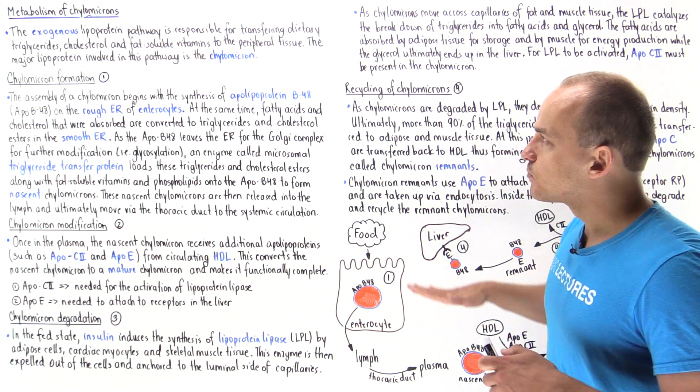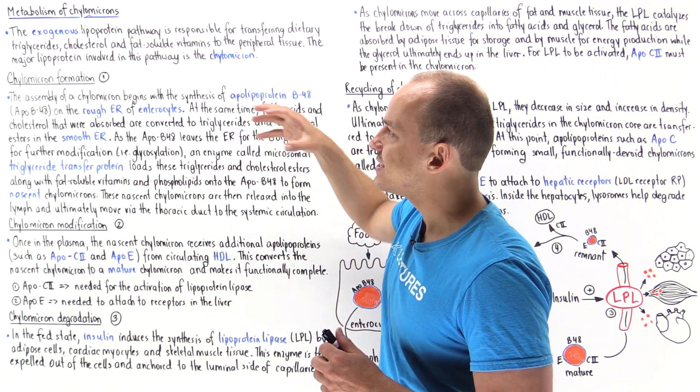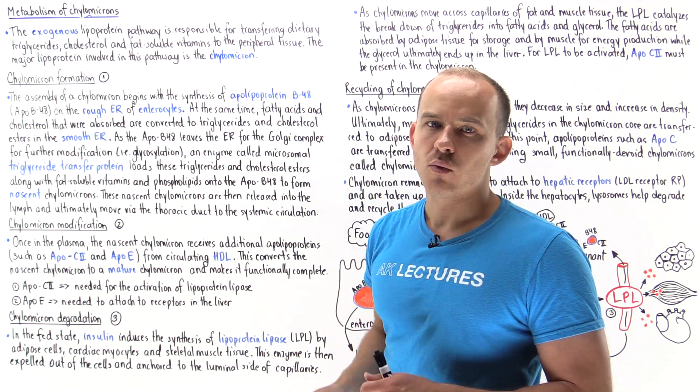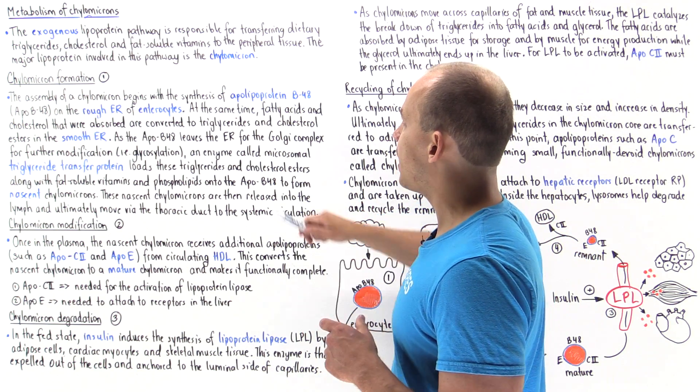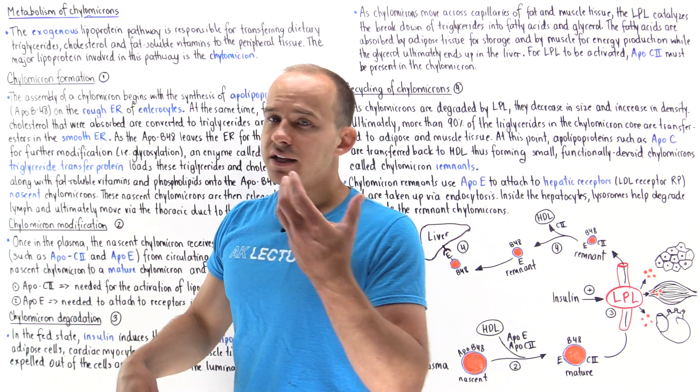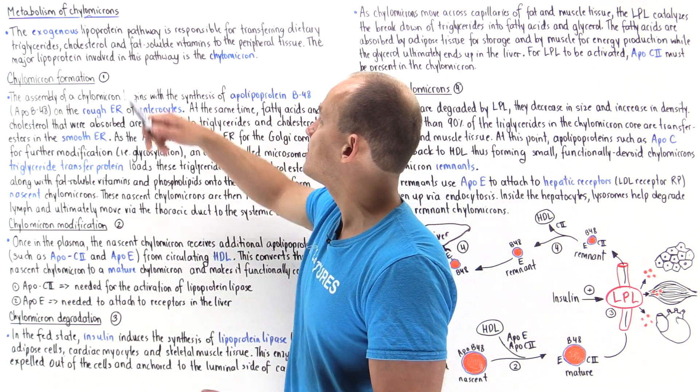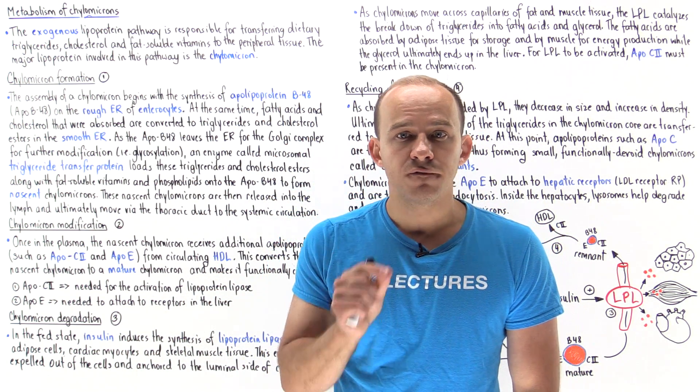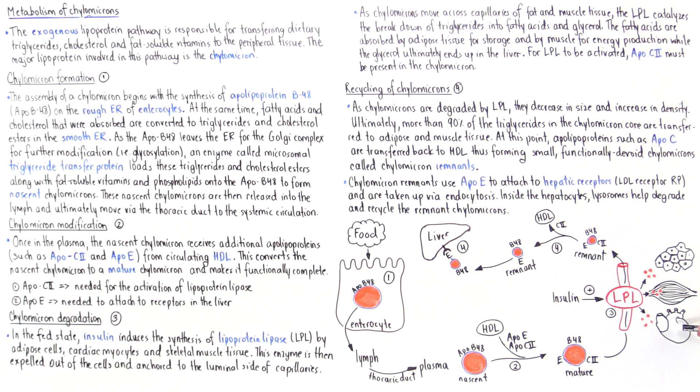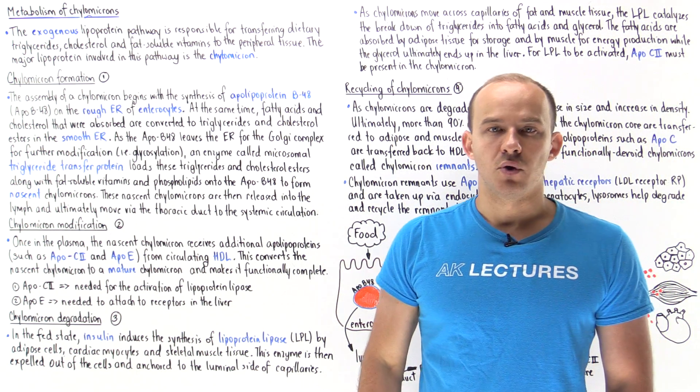To summarize, chylomicrons are the central lipoproteins of the exogenous lipoprotein pathway. This is the pathway that's responsible for transferring dietary fats—triglycerides, cholesterol, and fat-soluble vitamins—to the peripheral tissues of the body, specifically to places like the cardiac tissue, the skeletal muscle tissue, as well as our adipose tissue.